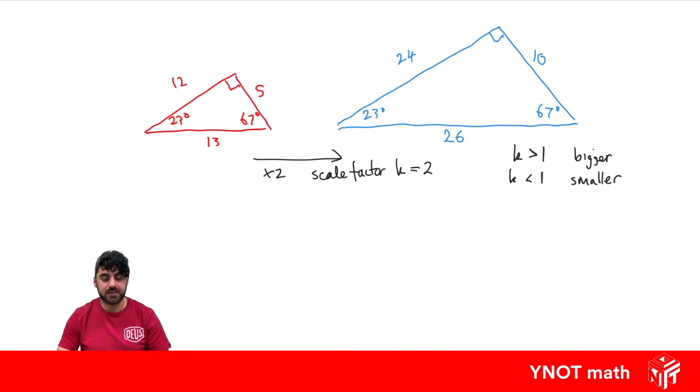And obviously if the scale factor equaled 1, the shape would be the same. And later on, we're actually going to look at similar triangles in more depth and look at how we can show that a couple of triangles are similar to each other.